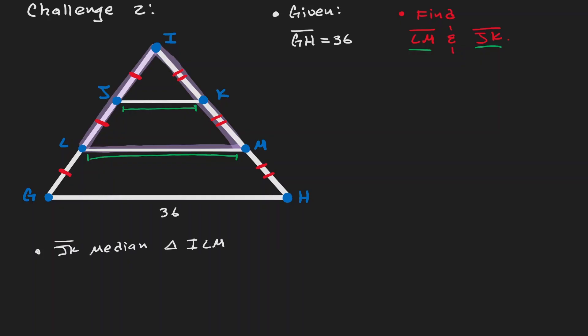And because it is the median, then we have that it is equivalent to half the length of the base. Let's put this information on the side. It's going to be useful later on. And as we did before, let's consider the trapezoid GHKJ.